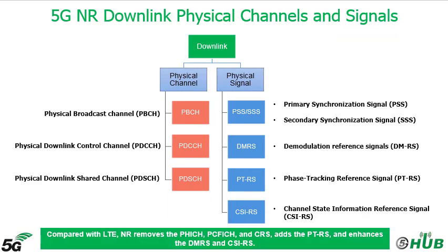As you see in this chart, Downlink has two types: Physical Channels and Physical Signals. Regarding the Downlink, we have three Downlink Channels and four Physical Signals. The three Physical Channels are: Physical Broadcast Channel, Physical Downlink Control Channel, and Physical Downlink Shared Channel.